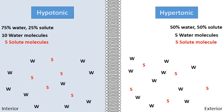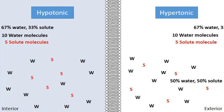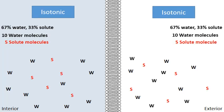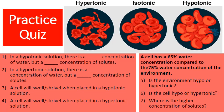After osmosis, there are only 10 water molecules on the left — 67% water and 33% solute. On the right, there are now also 10 water molecules — also 67% water and 33% solute. They're equal to one another. Neither is hypotonic or hypertonic anymore. Once equilibrium is established, this is what an isotonic solution is — hypo, hyper, and isotonic all work together.